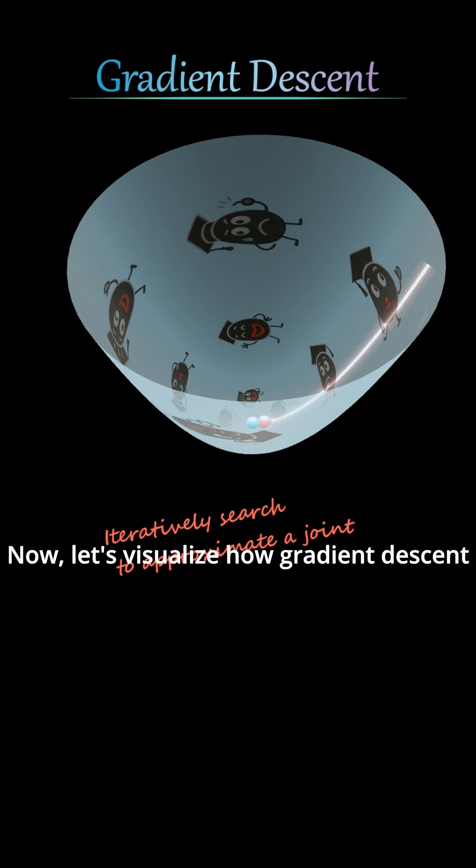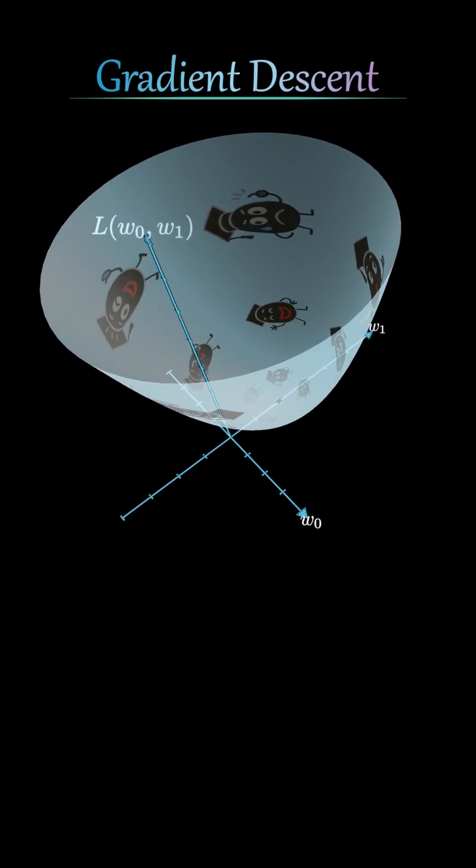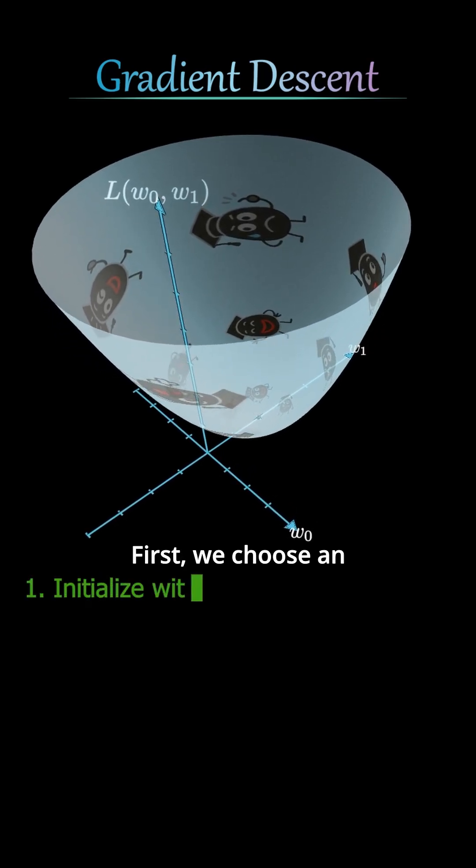Now, let's visualize how gradient descent works in linear regression where the loss surface is convex. First, we choose an initial point on this paraboloid. You can pick it randomly. It doesn't really matter.